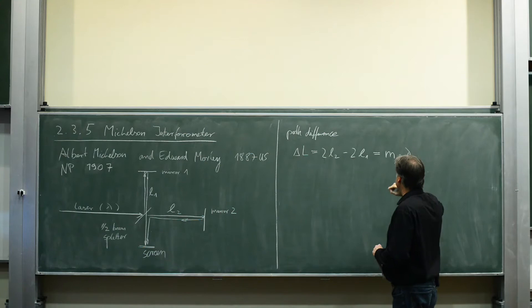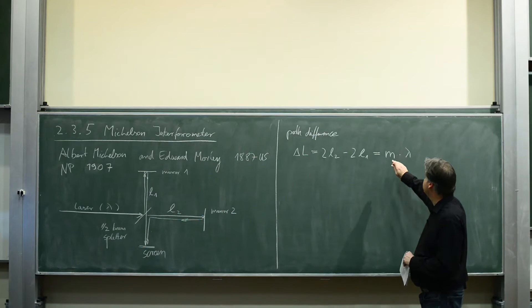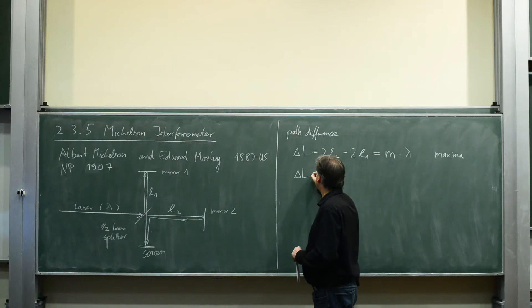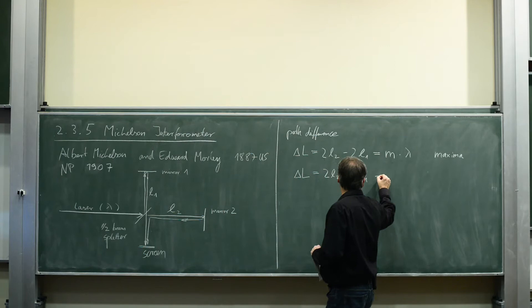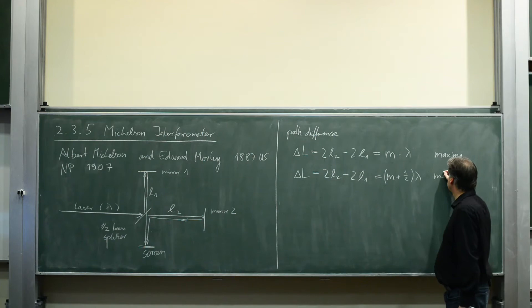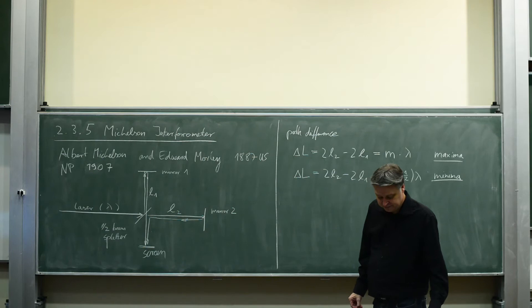And for maxima, the condition for constructive superposition of waves must be fulfilled, namely M times lambda. Delta L, two times L2 minus two times L1 is M plus 1 half lambda. That would be the condition for minima. This is the Michelson interferometer.